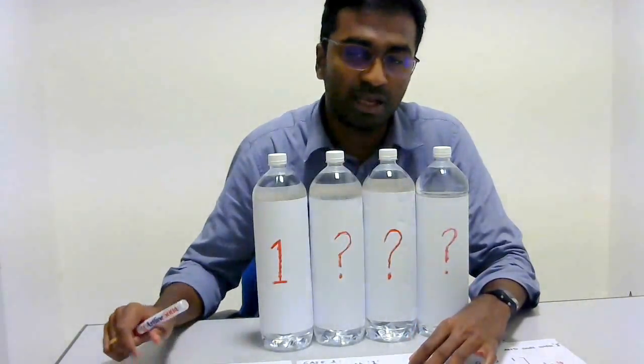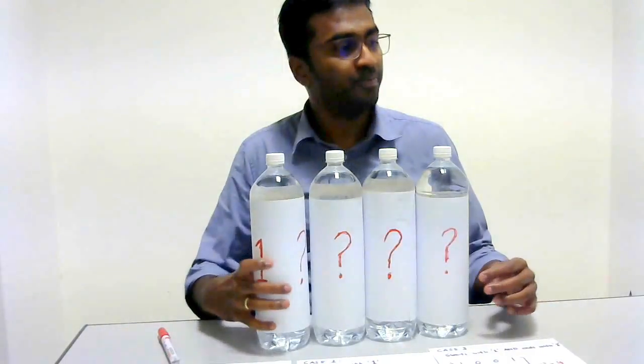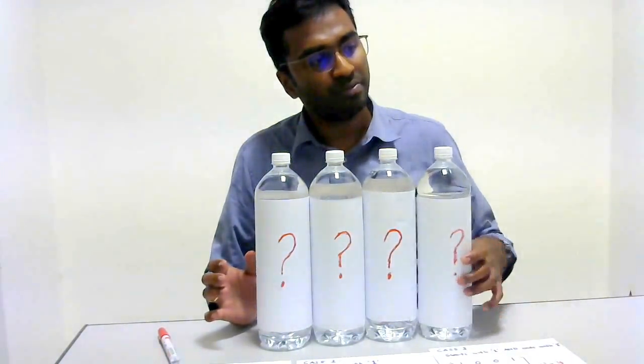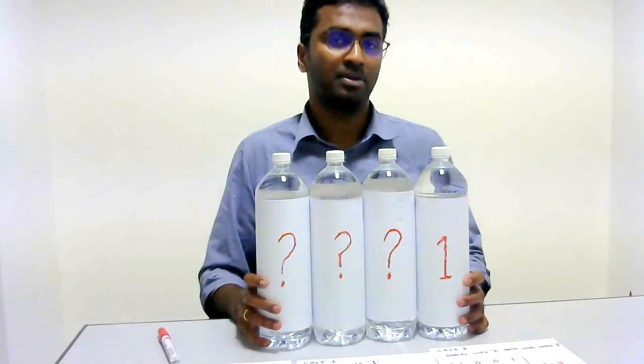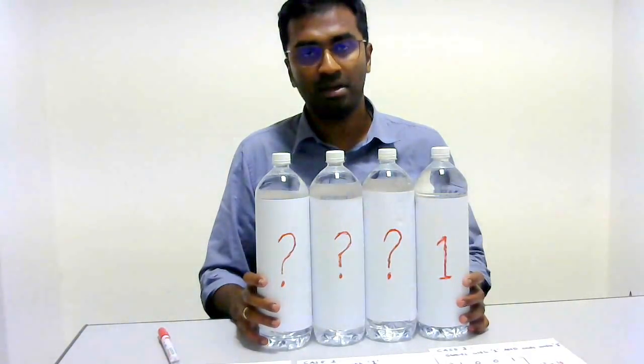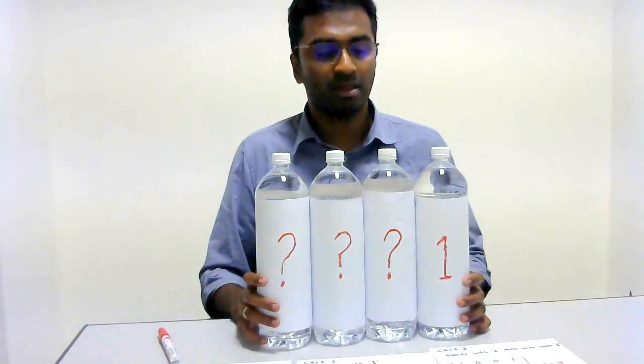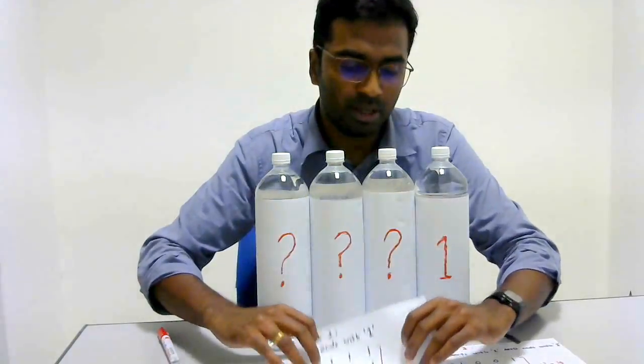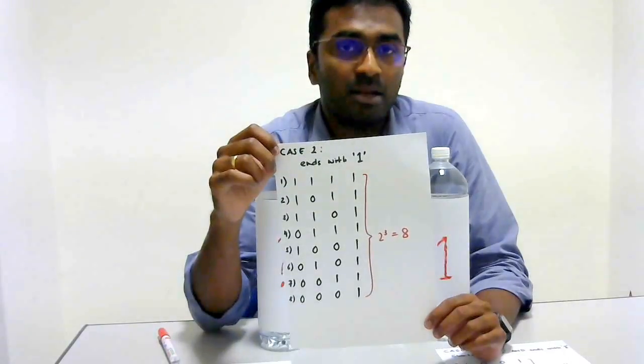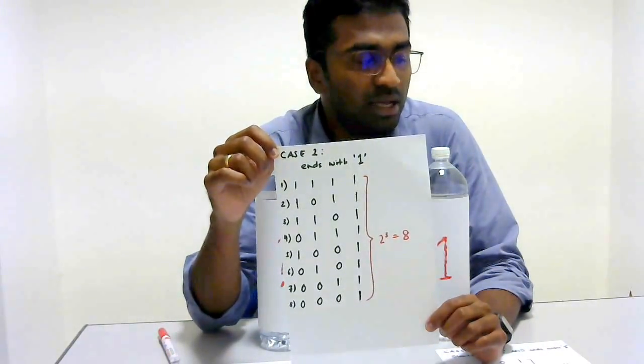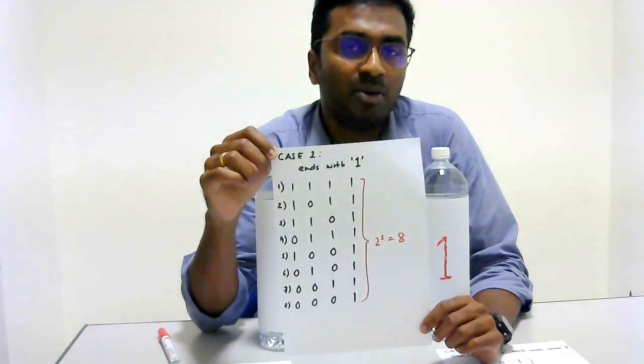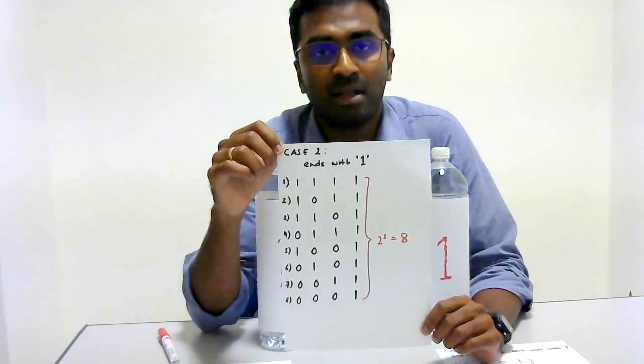Now let's count for case 2 where the string ends with 1. This is exactly similar to our first case where we have 2^3 or 8 combinations of strings that end with 1. So do you think by adding our case 1 and case 2, we are going to get the answer?